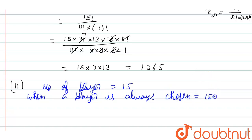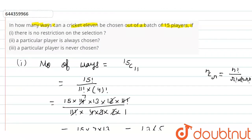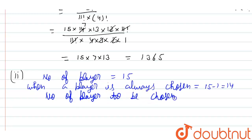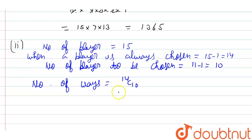So the number of players left is 15 minus 1 = 14. Since one player is already chosen, the number of players remaining to be selected is 11 minus 1 = 10. So we have to choose 10 players from 14, giving number of ways equal to 14C10.